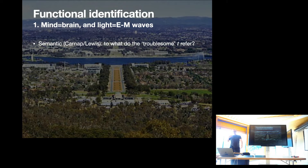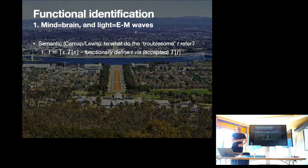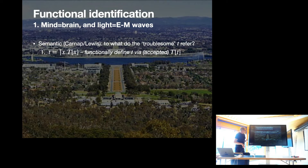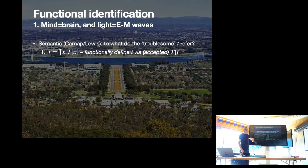The proposal is we do it descriptively, using theory T. What's proposed is we define the theoretical terms using a unique-object operator — the closest I could get to the standard definite article operator, so it means 'the unique.' So the t's are the unique X that satisfy the theoretical predicate.